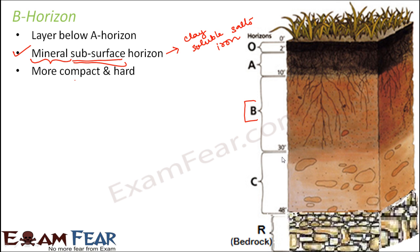Looking at a cross-section picture, the B horizon has quite more depth when compared to the O or A horizon — it is quite deep. This is the layer where the roots of plants are ending. The root hairs extend up to the A horizon and to some extent into the B horizon. That is why A and B horizons are rich in minerals, so that through the root hairs, plants can get whatever they need for their growth and development.